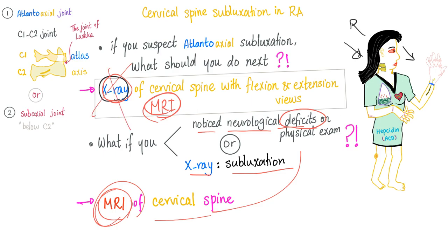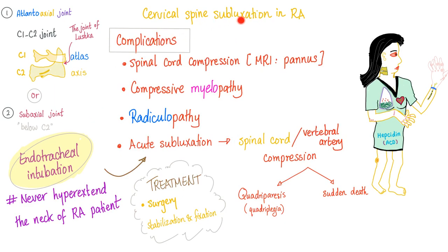Why MRI when neurological deficits are present? Because there is nothing in the world that shows the spinal cord and nerves as clearly as MRI. What are the complications of subluxation of C1-C2? Spinal cord compression — because of the pannus, which is inflamed granulation tissue with inflammatory cells and fibroblasts. MRI can show you the pannus beautifully.